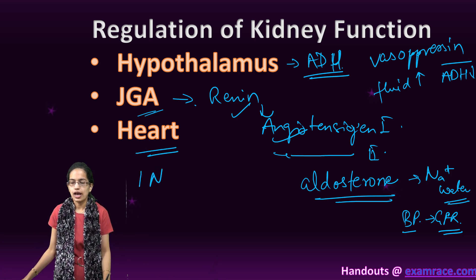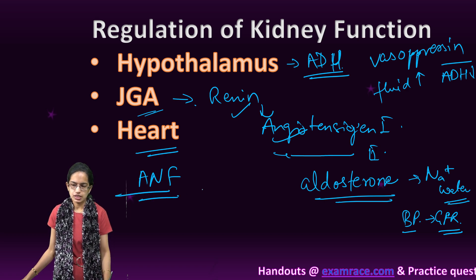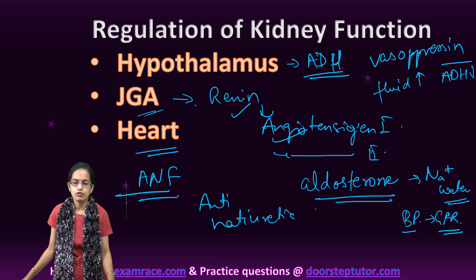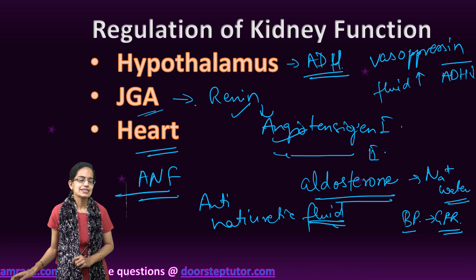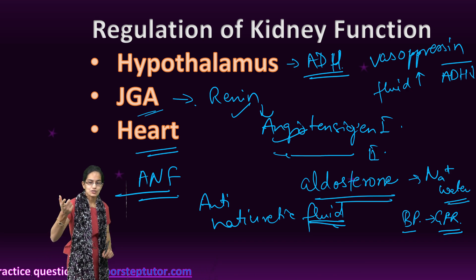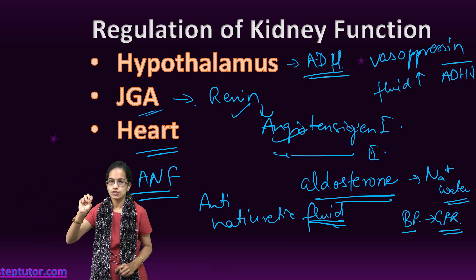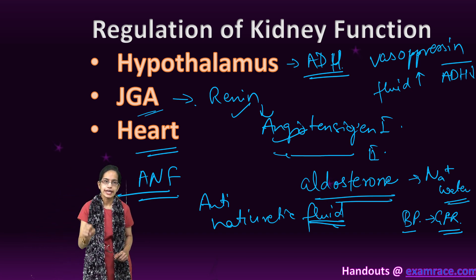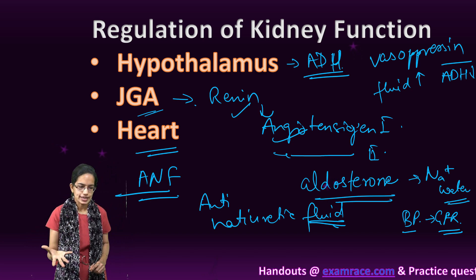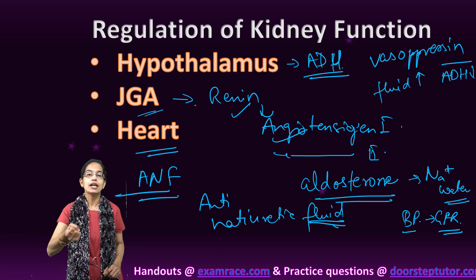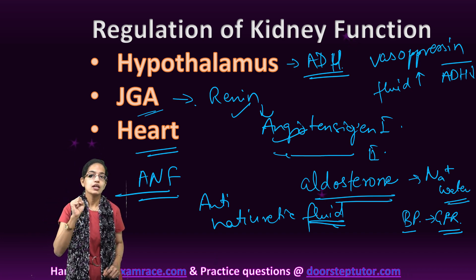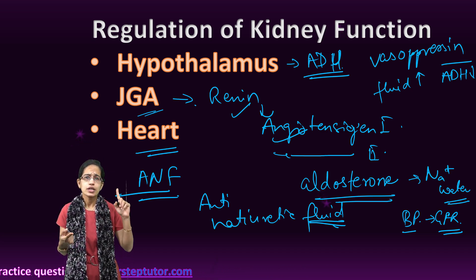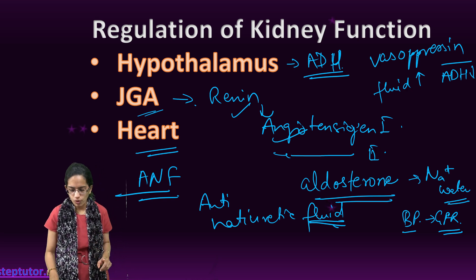Through the atria of the heart, ANF — the atrial natriuretic factor — is released. ANF is a vasodilator. While vasoconstrictors constrict blood flow and increase blood pressure, ANF decreases blood pressure in glomerular blood flow and thereby checks the renin-angiotensin mechanism that is being formed.